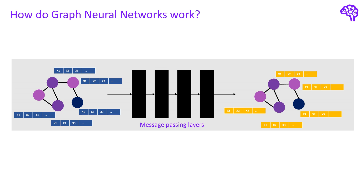Within the graph neural network you have several so-called message passing layers. These are the core building blocks of GNNs and are responsible for combining node and edge information into the node embeddings. How exactly this is done will be part of the next video. If you have questions, leave a comment and I'll do my best to answer. See you in the next video.